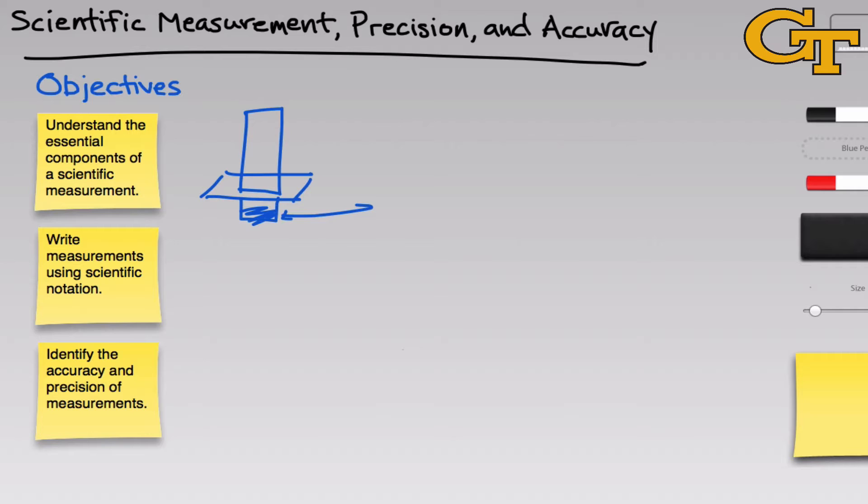The reason we use scientific notation is because scientific measurements span a huge range. They span what we call orders of magnitude. 10 to the first power, 10 to the second power, all the way up to 10 to the 23rd power. And they go the other direction as well, 10 to the negative 1, 10 to the negative 2, 10 to the negative 12 or 15.